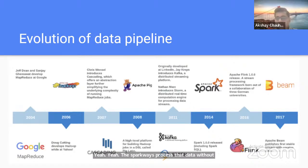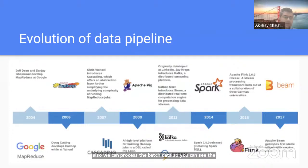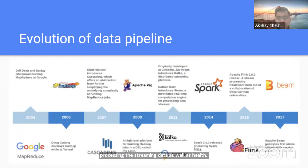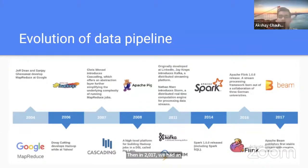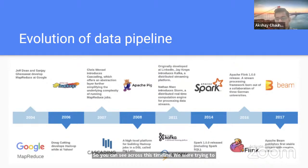By 2011, we had technologies for batch processing and real-time streaming. In 2014, Spark 1.0.0 was released, providing Spark SQL as an abstraction layer on top of Spark. This was significant because SQL was the primary language used by many developers, making it easy to write Spark queries without custom jobs. In 2016, Apache Flink introduced a lambda architecture supporting both stream and batch data. In 2017, Apache Beam was introduced with ETL capabilities and components from Flink, continuing the trend of optimizing and simplifying data processing.